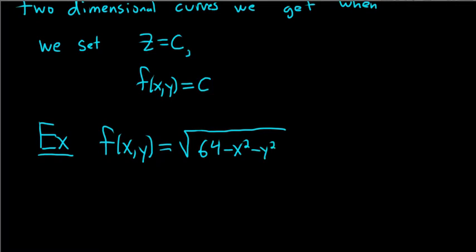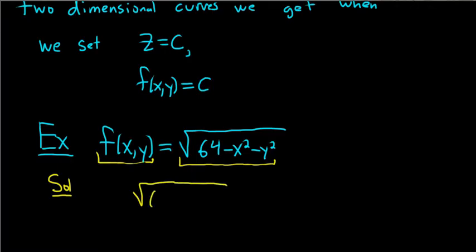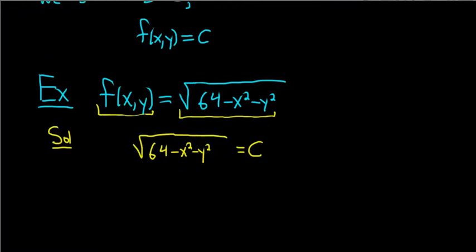To find the level curves, all we have to do is take our function and set it equal to c. So we take the square root of 64 minus x squared minus y squared and set it equal to c. Then we just solve until we get something familiar. We can get rid of the square root by squaring both sides, giving us 64 minus x squared minus y squared equals c squared.